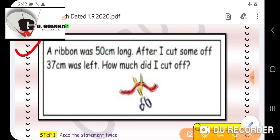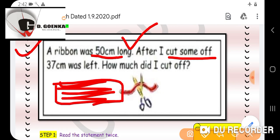A ribbon was 50 centimeters long. After I cut some off, this means I was having a 50 centimeter long ribbon and I just cut some of it. I am not knowing how much I did cut. Then I was left with 37 centimeters, and this is the clue word that I am circling. How much did I cut off? So I have to find out how much is cut by me.